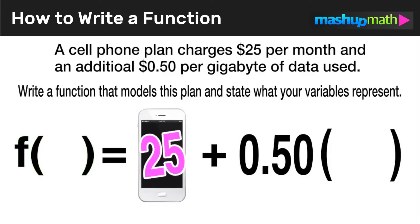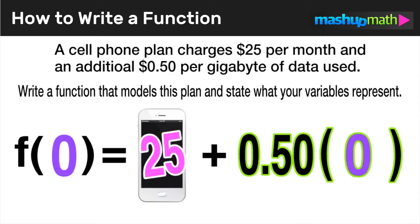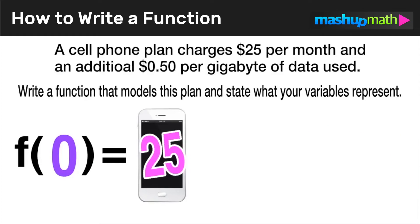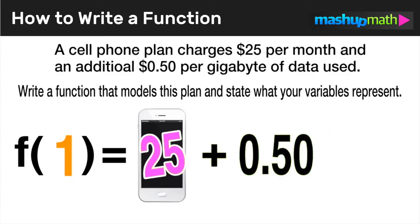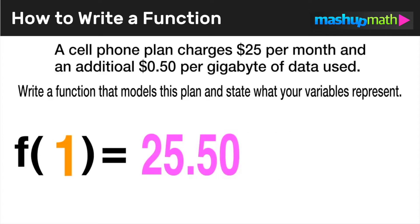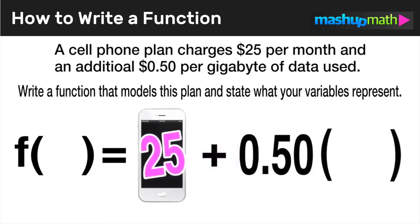This is a good start to structure a function. Let's imagine a month where we use zero gigabytes of data — we wouldn't have to pay any extra fee, since 50 cents times zero is just zero, and we're left with the original $25 fee. Now let's say we use one gig of data in a month. In this case, 50 cents times one is just 50 cents, and then $25 plus 50 cents would be a $25.50 monthly bill.